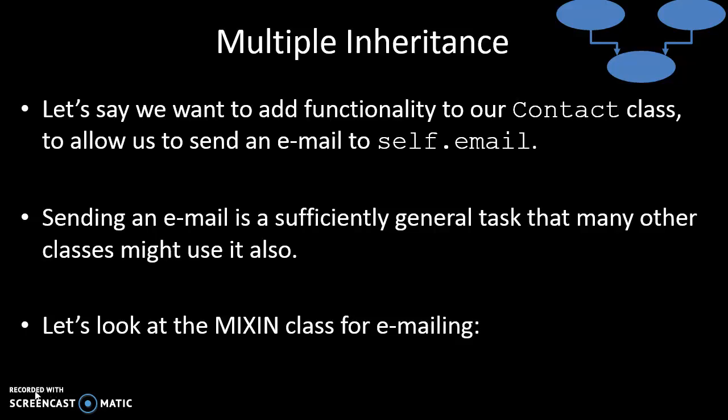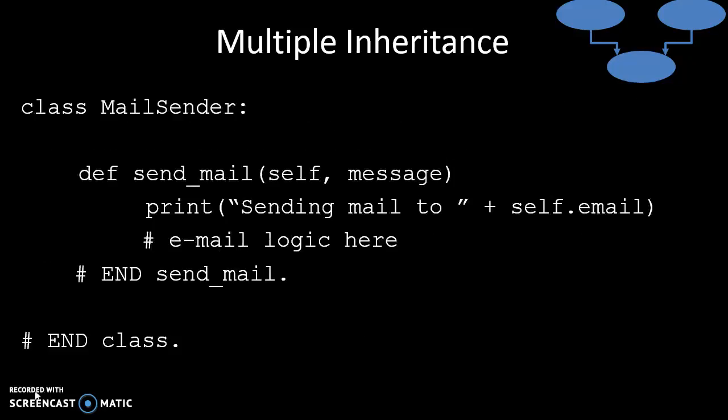So we might create a mixin class specifically for emailing. This is what the code would look like — it's a class called MailSender. It has one method in it called send_mail, which takes in a message. The self is the object we're talking about. For the sake of this example, we're not going to look at the logic required to send a message using a mail server. All we'll do is print out a message saying 'sending mail to' whoever the message is intended for. That's our MailSender class.